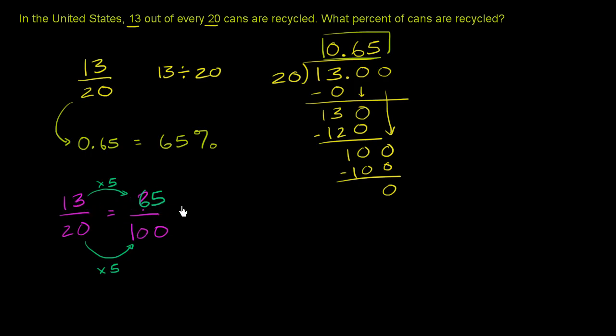And so you would get 65 over 100, which is the same thing as 65 per, let me write this percent symbol, 65%. And just a reminder, percent literally means per 100. 65 per 100, 65%.